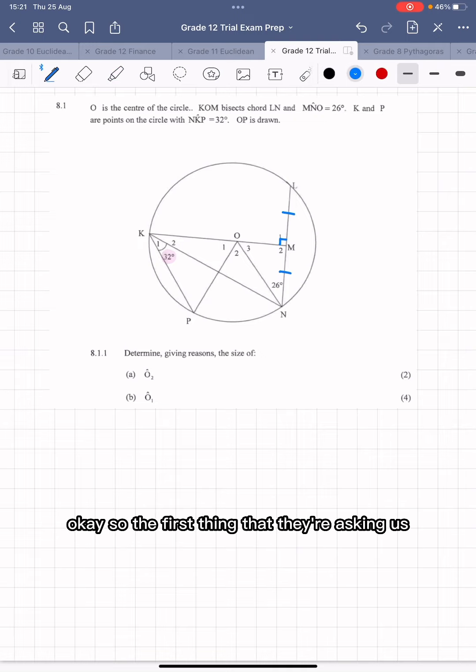So the first thing that they're asking us is to determine, giving reasons of course, the size of O2. Now, O2 is an angle at the center, which is subtended by this arc. So O2 is at the center.